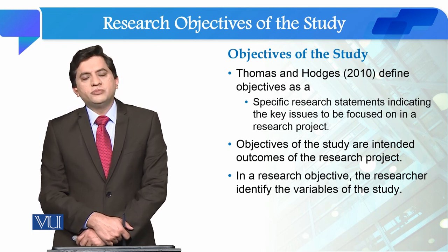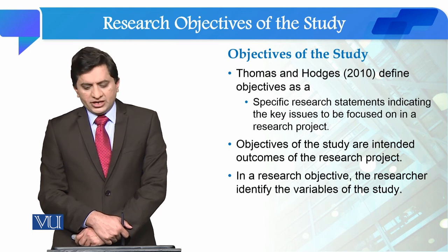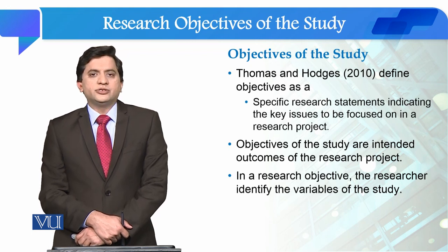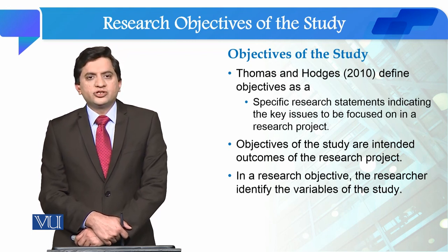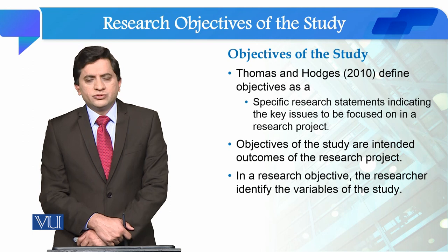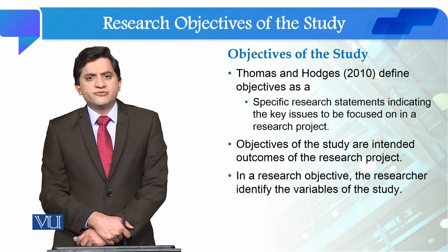We are going to understand the objectives of the study. In research objectives, the researcher identifies the variables of the study as well. जब हम research objectives बनाते हैं तो उसी में हम यह determine कर लेते हैं कि हमारे variables of the study कौन से होंगे — कौन सा independent variable होगा, कौन सा dependent variable होगा, और किस variable को हम moderating या mediating variable समझ रहे हैं।